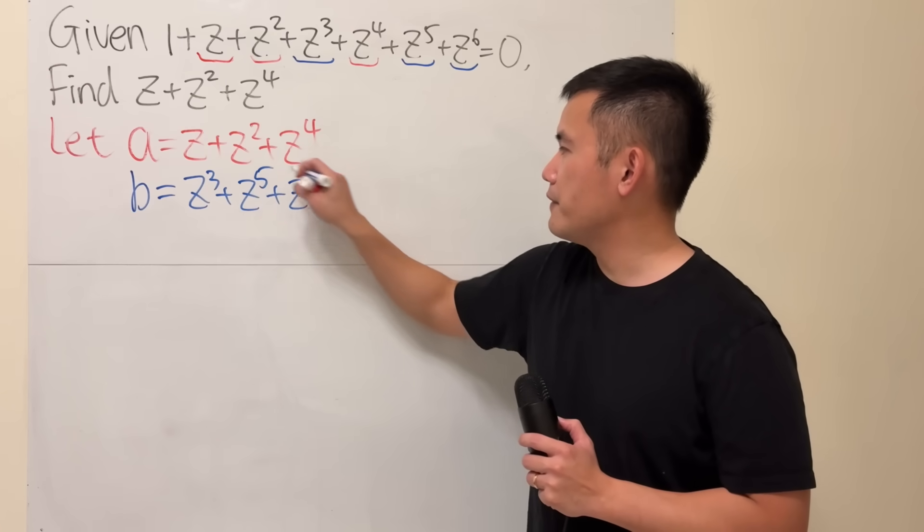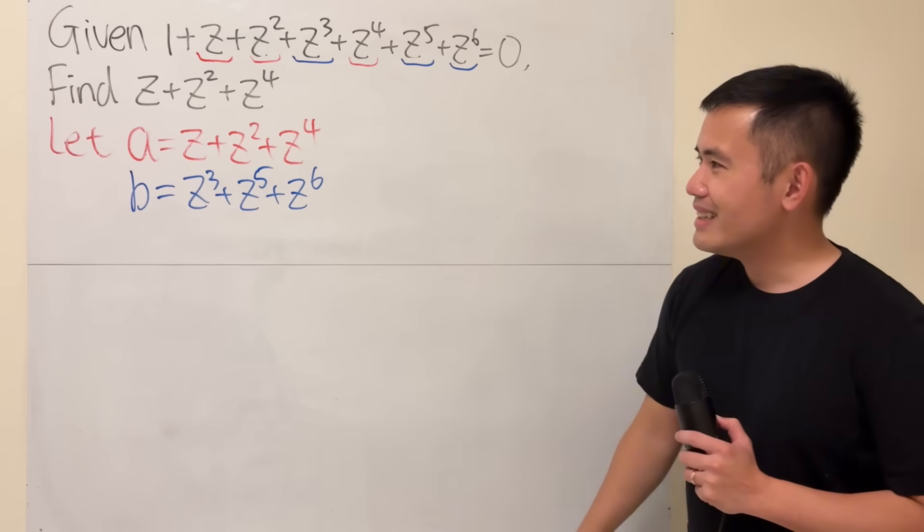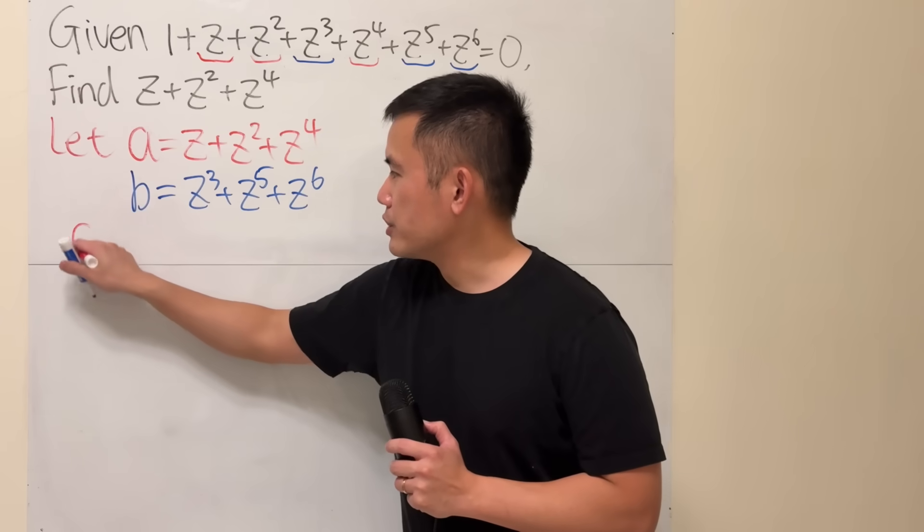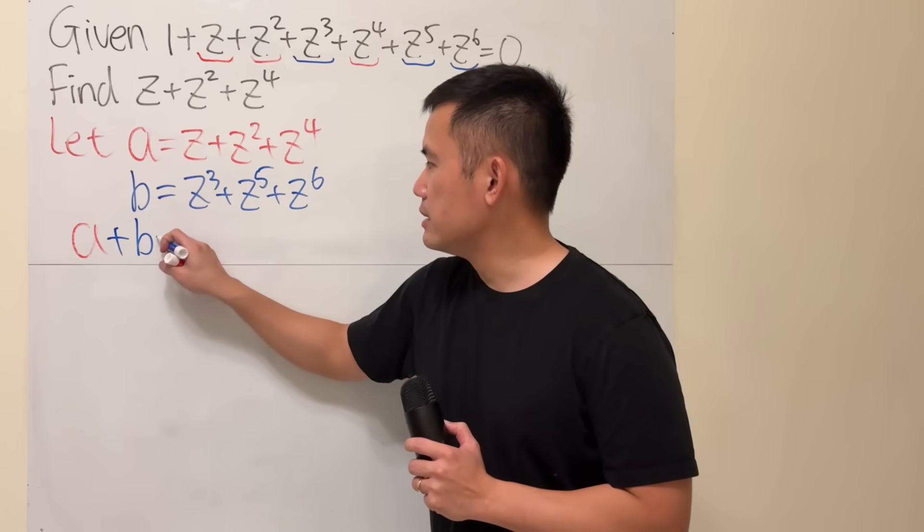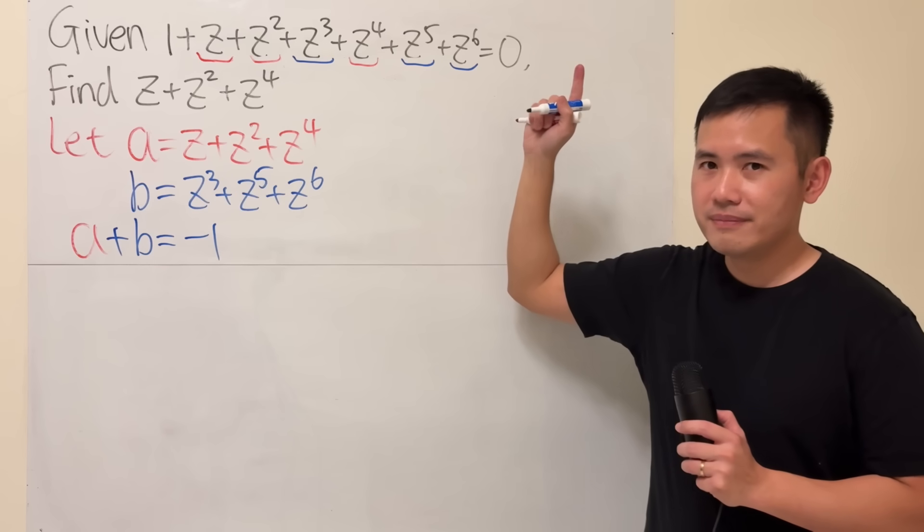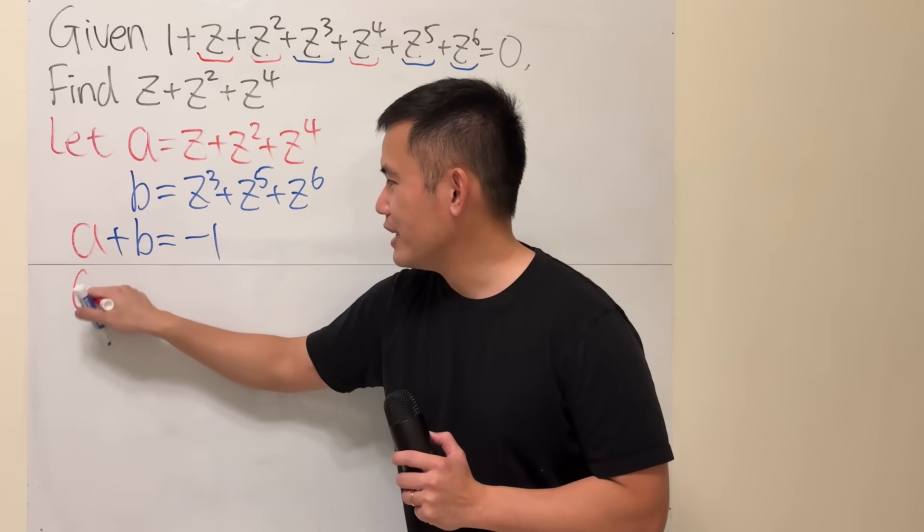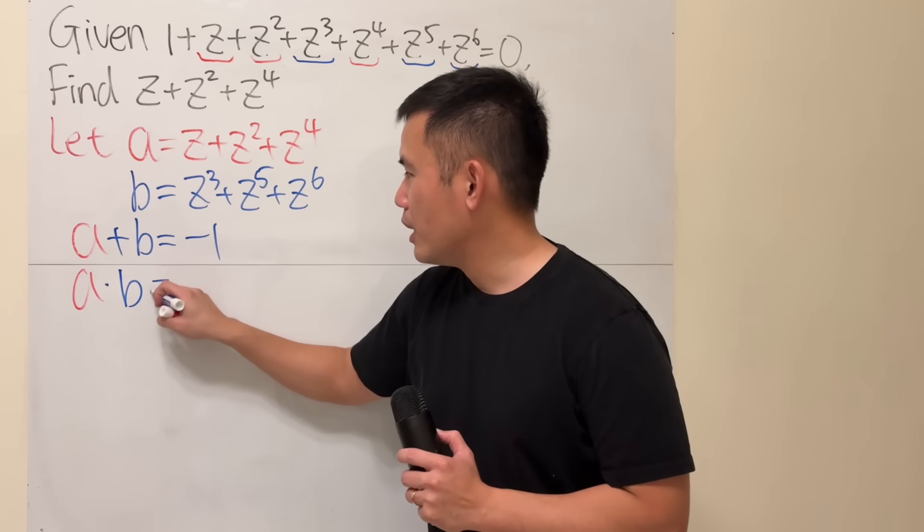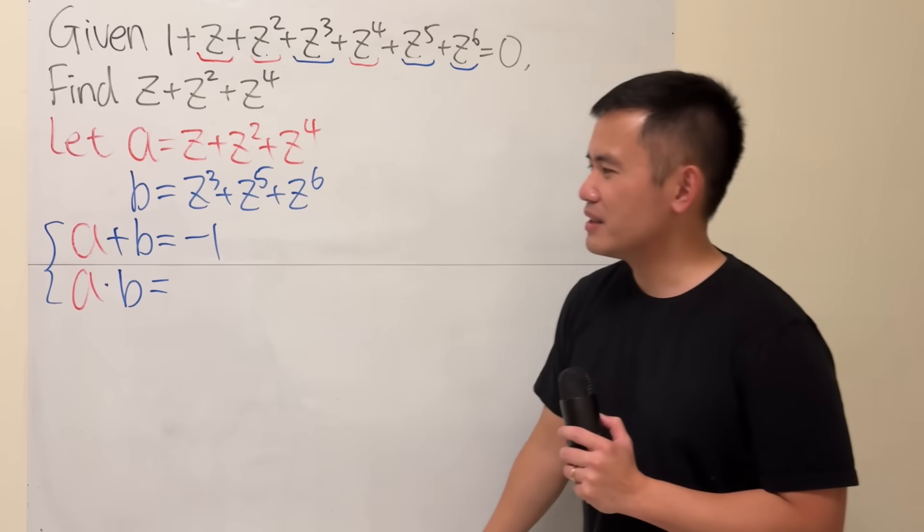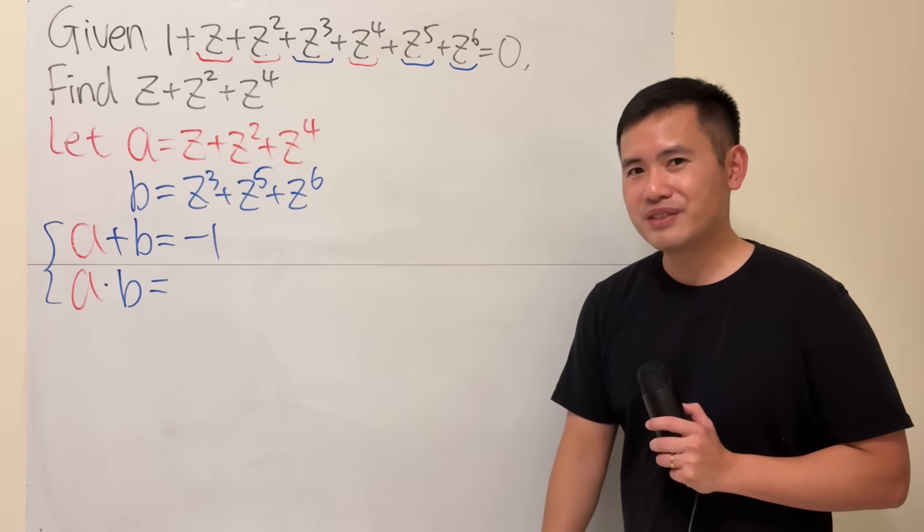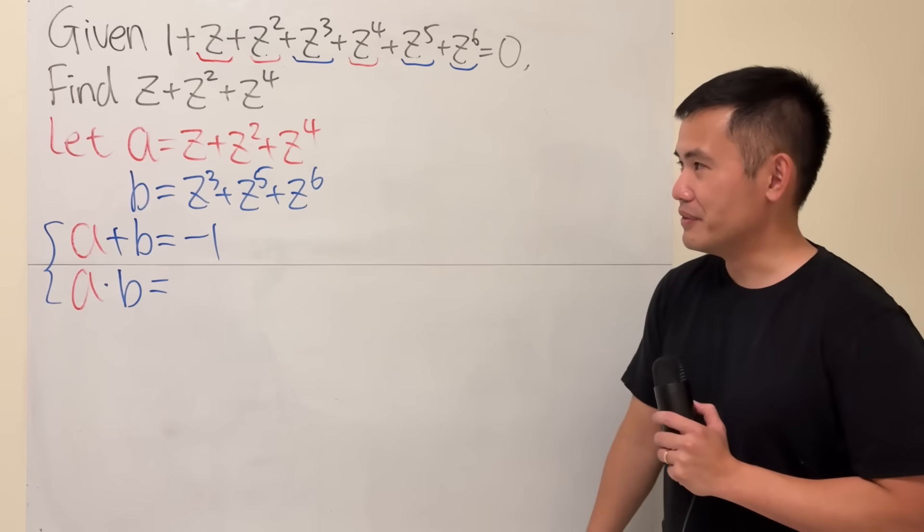And then the blue part will be b, which is z cubed plus z to the fifth plus z to the sixth. From the original equation, we know a plus b is equal to negative one.